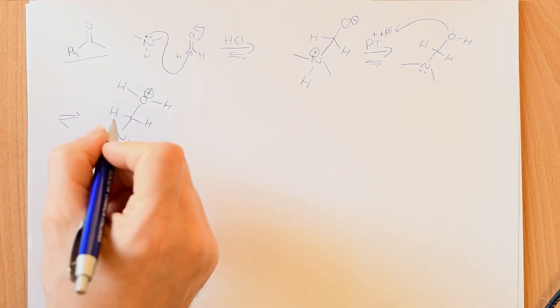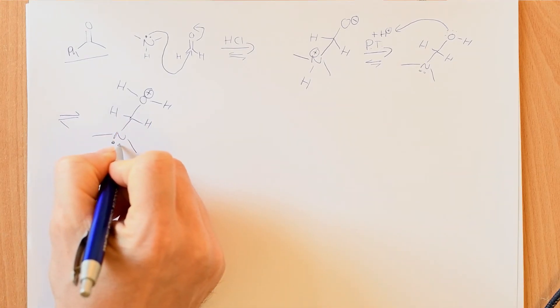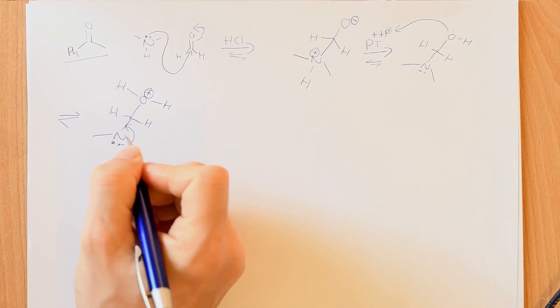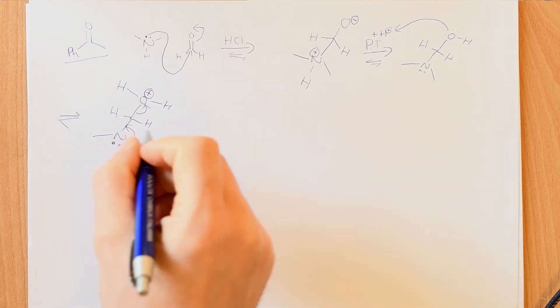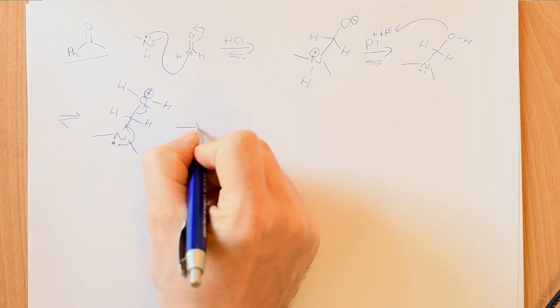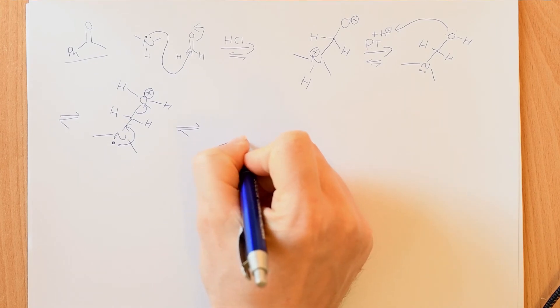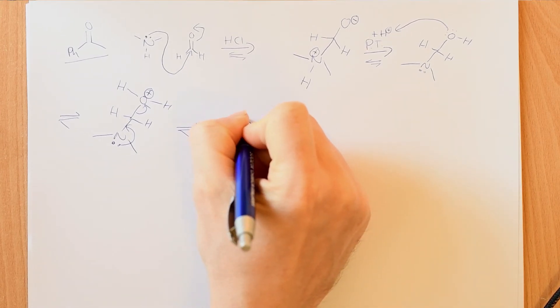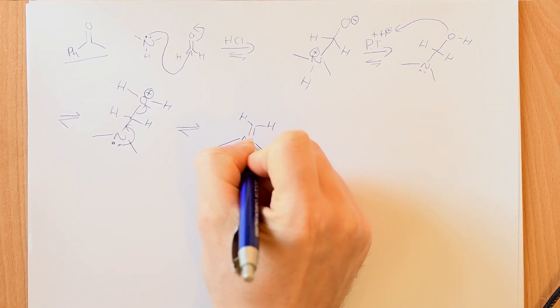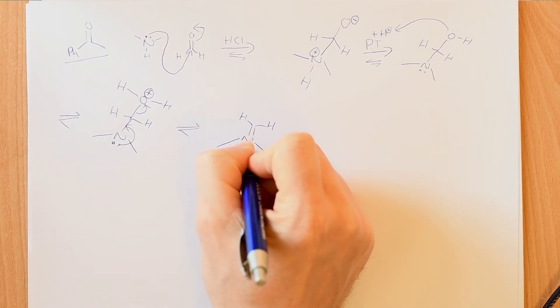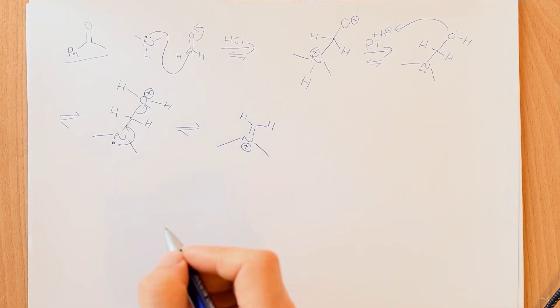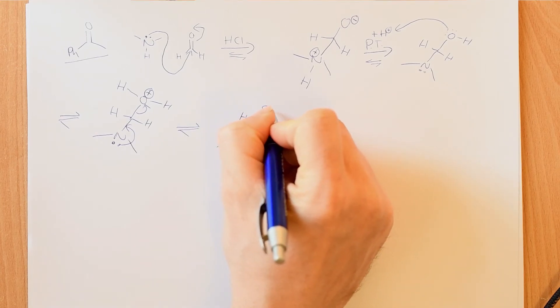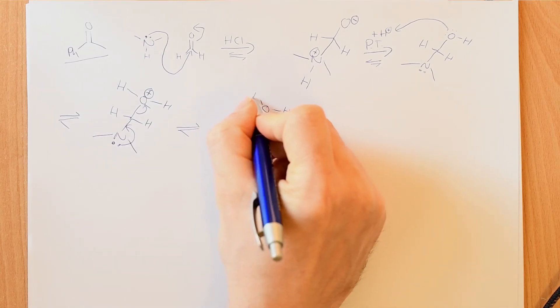So now this is a really good leaving group. The lone pair on the nitrogen can reform or form a carbon-nitrogen double bond, and at the same time, kick out water as a leaving group. And again, all of these steps are in equilibrium. And there's now a positive charge on the nitrogen because that lone pair formed a new carbon-nitrogen double bond. So nitrogen is now sharing a pair of electrons that it had all to itself. And we have also made water, H2O.